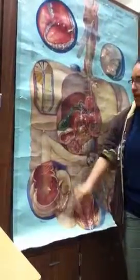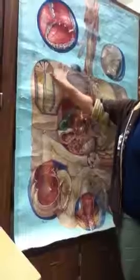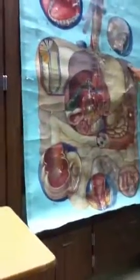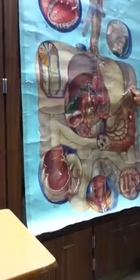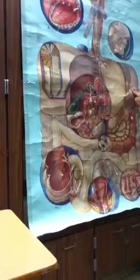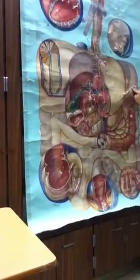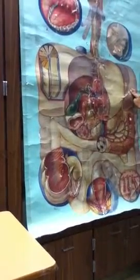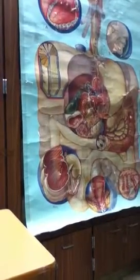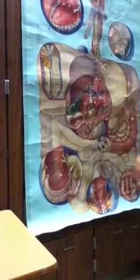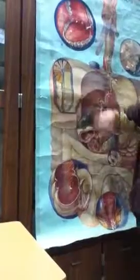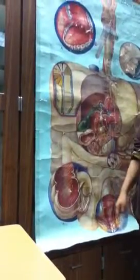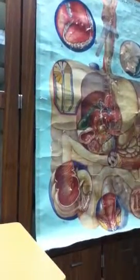And the corners? She said these corners right here. So this would be your right colic flexure. And then this side would be your left colic flexure.